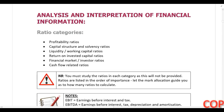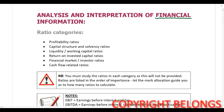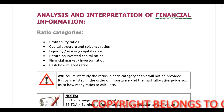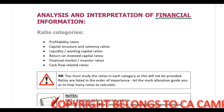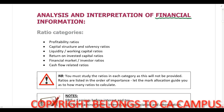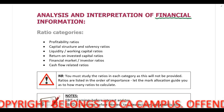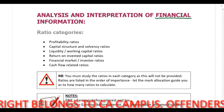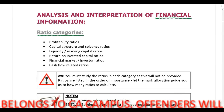We are going to start this lecture with the analysis and interpretation of financial information. If you are required to analyze and interpret financial information of a company, you are going to have to perform various different ratio calculations, and then in addition to that, you are going to have to comment on those ratio calculations. For the purposes of this course, it's important to note that we have six different ratio categories.